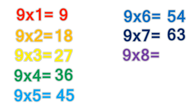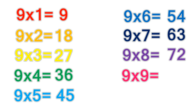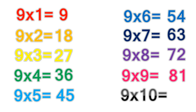9 times 8 equals 72. 9 times 9 equals 81. 9 times 10 equals 90.